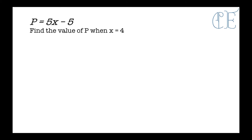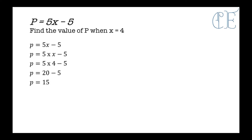P equals 5x minus 5. Find the value of p when x equals 4. Expanding: 5x means 5 times x. Notice I'm writing this out in a nice, neat, methodical way — this is how you should write answers for your GCSEs, because you'll get more marks showing all your working. So p equals 5 times 4 minus 5. Remember BIDMAS — multiply first: 5 times 4 is 20, so p equals 20 minus 5, which means p equals 15.